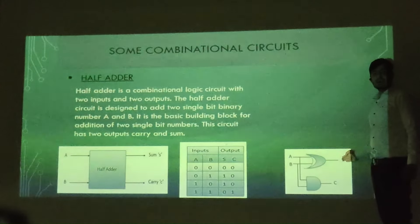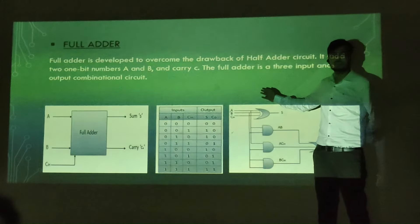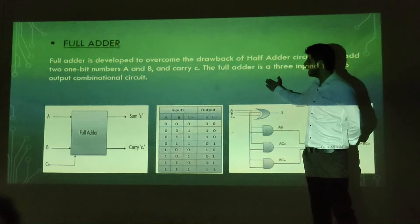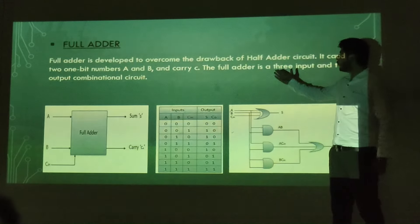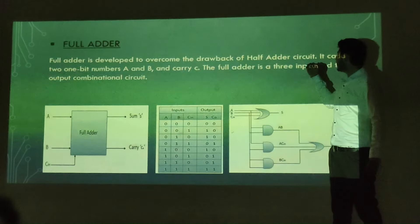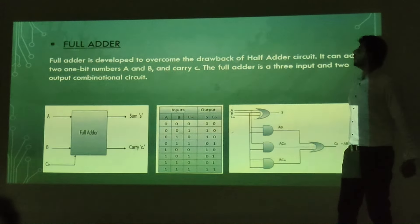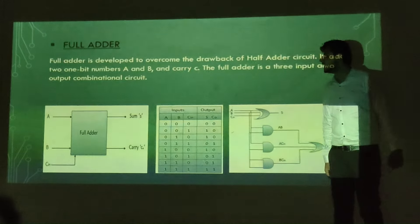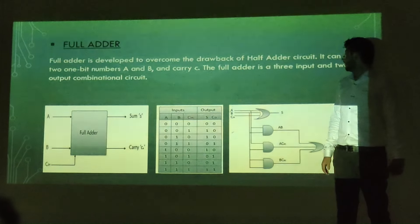This is the truth table and the Boolean diagram of the half adder. Next is the full adder. The full adder is developed on the concepts of the half adder circuit. It can add two one-bit numbers A and B and a carry-in C.